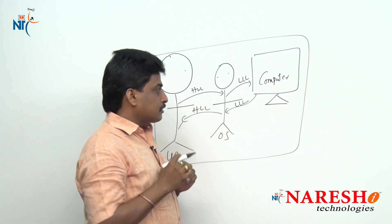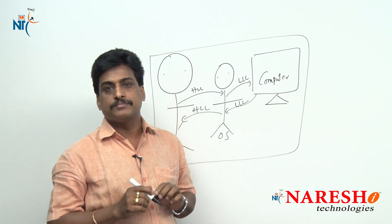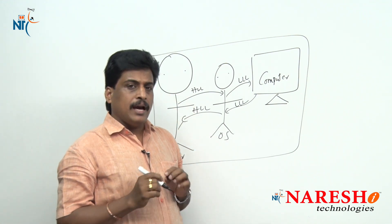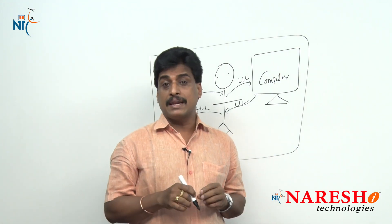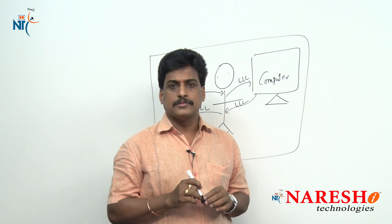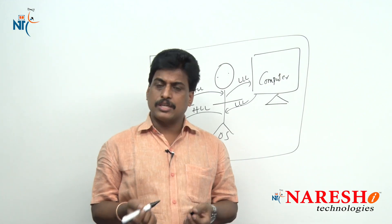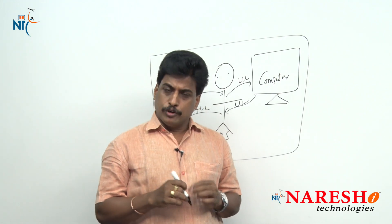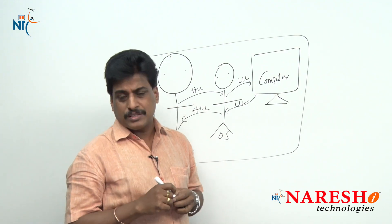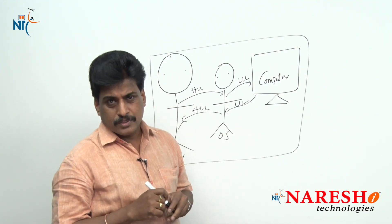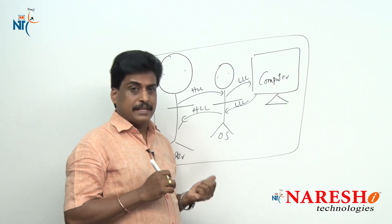Let us see what are the main functions of the operating system. Generally, an operating system has several functions: first, memory management; second, file management; third, security; and fourth, disk management. Various functions are available within our operating system.